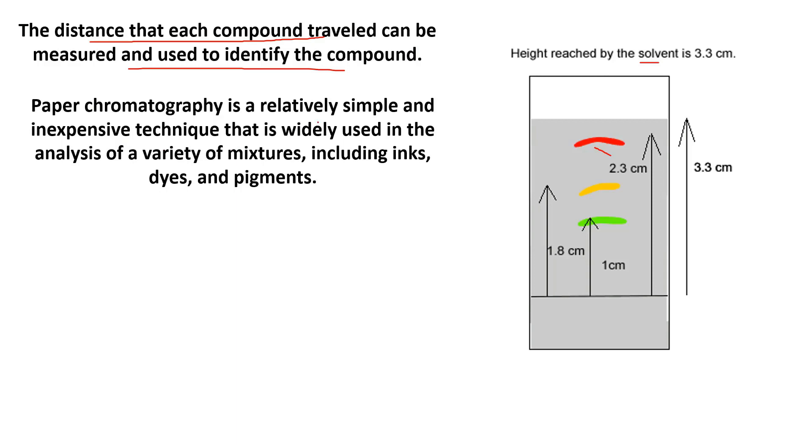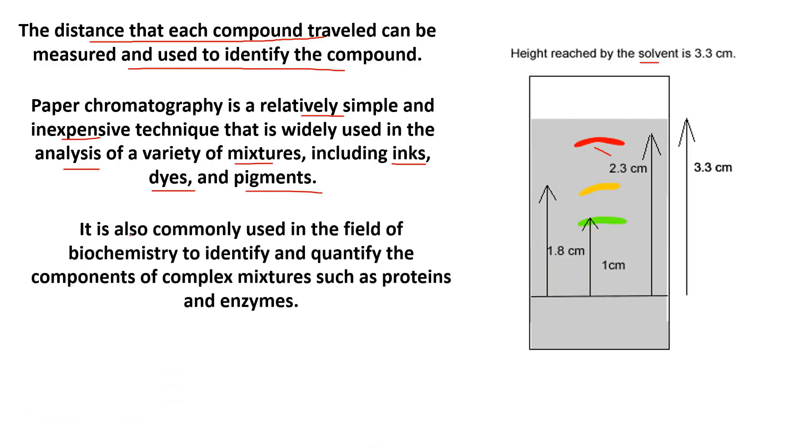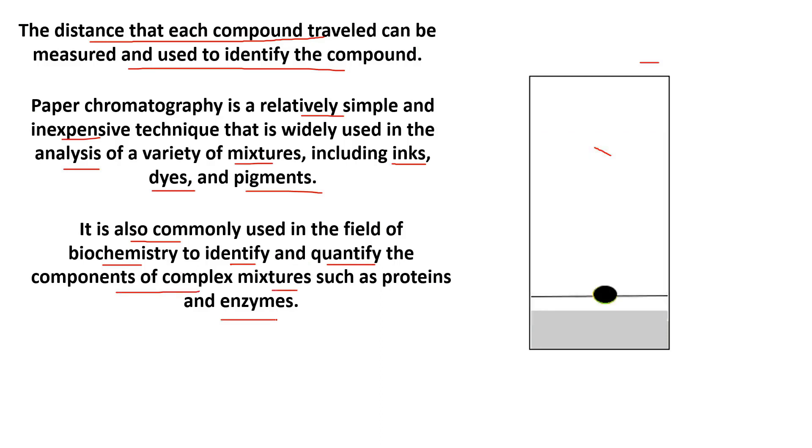Paper chromatography is relatively simple and inexpensive, and it is widely used in analysis of mixtures like inks, dyes, and pigments. It is also commonly used in the field of biochemistry to identify and quantify the components of complex mixtures such as proteins or enzymes.